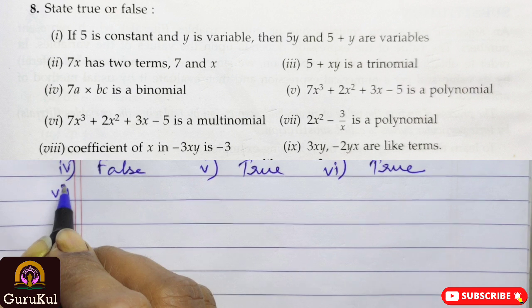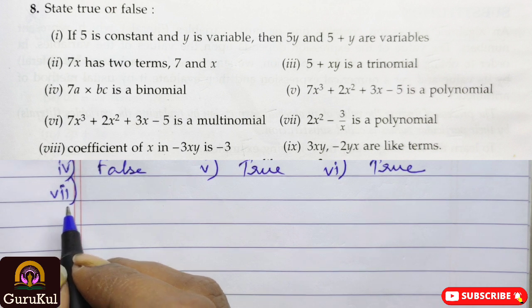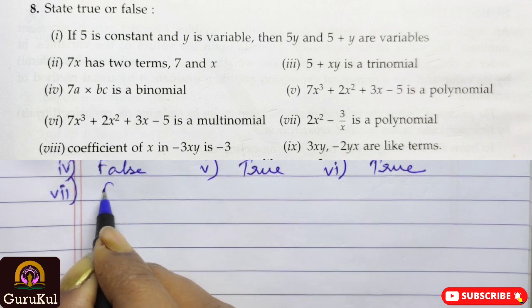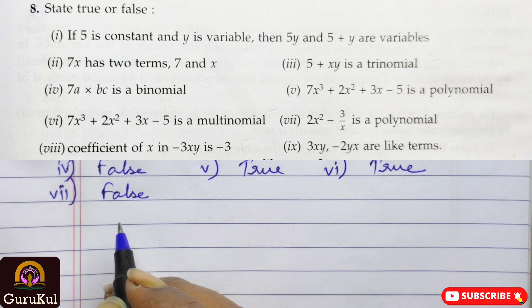Number 6, 2x square minus 3yx is a binomial, this is false. Because there should not be any alphabets at the denominator, if there is a fraction.